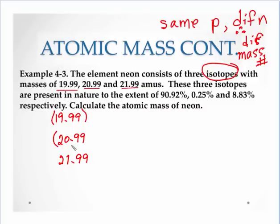Now, to calculate a weighted average, remember we're going to multiply each of these, not by their percent. Instead, we're going to take the percent and divide it by 100 to get it on a fraction of a whole. So that would be 0.9092, if I divided that number by 100.